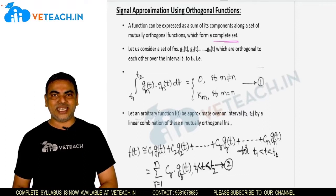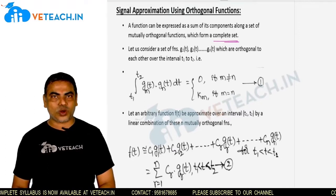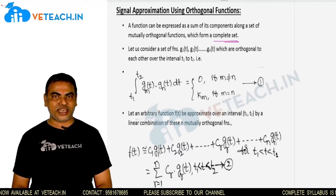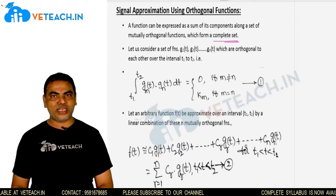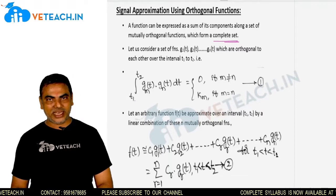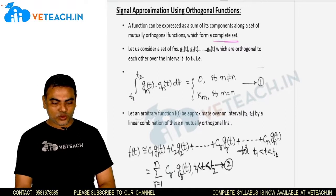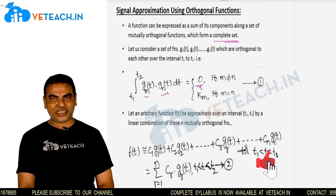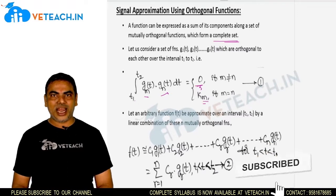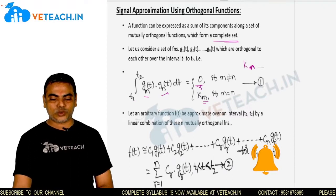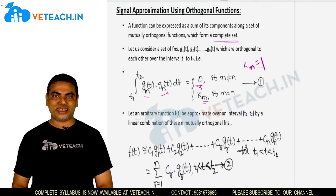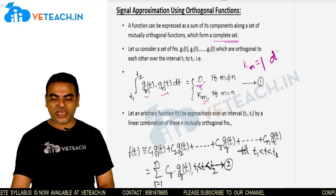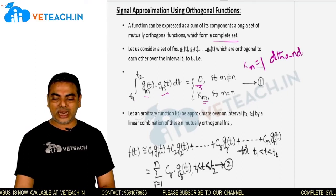Since g1 to gn(t) are orthogonal over the interval t1 to t2, we can say the integral from t1 to t2 of gm(t)·gn(t) dt equals 0 if m is not equal to n. And if m equals n, it will be some constant, let us say km. Whenever this constant km equals 1, we can call those orthogonal functions orthonormal functions.